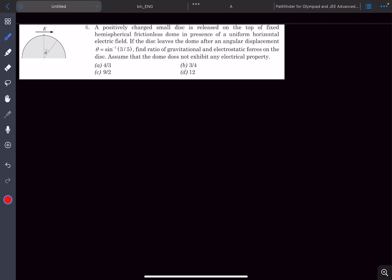Okay, so moving on to problem number six. So in this question, a positively charged small disk is released on the top of a fixed hemispherical frictionless dome. We have a constant electric field towards the right of magnitude E and it's given that if the disk leaves the dome after an angular displacement of theta, so it loses contact at this point, then we have to find the ratio of gravitational and electrostatic forces on the disk.